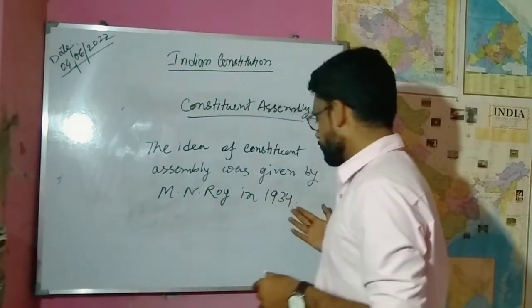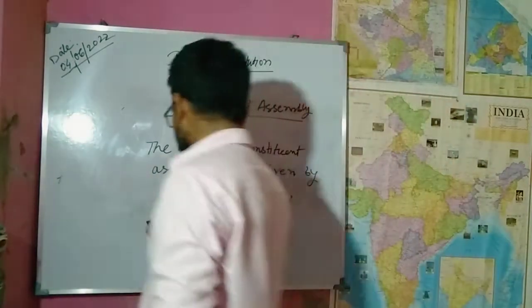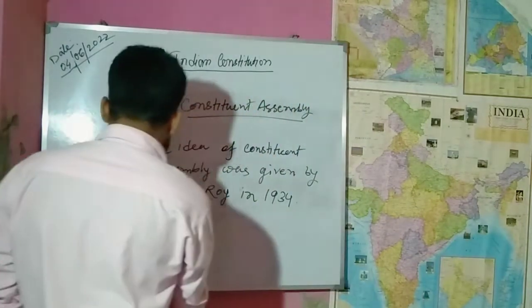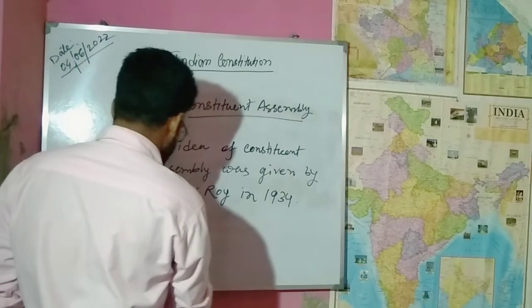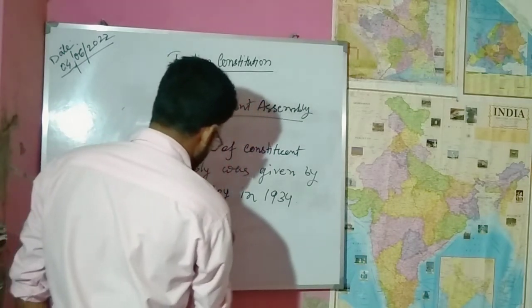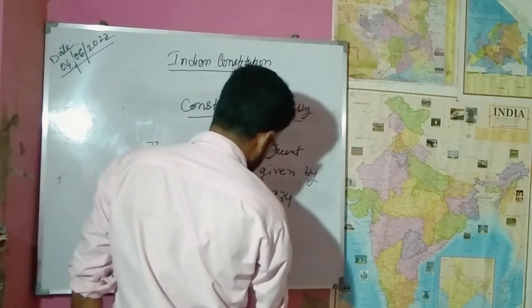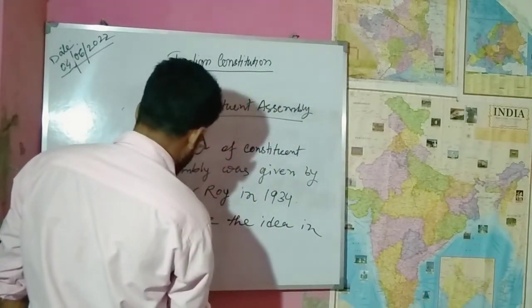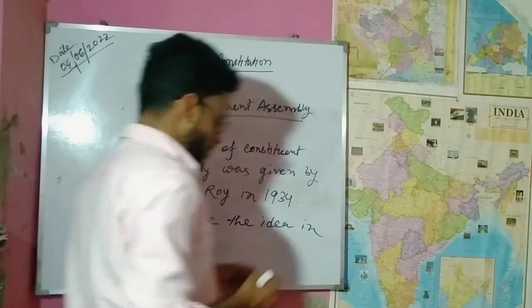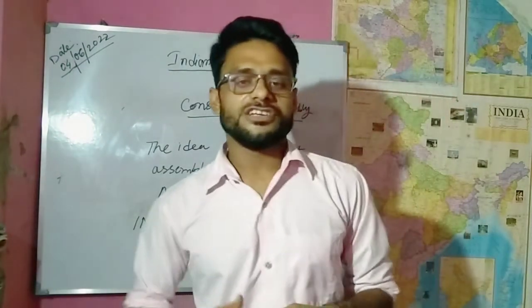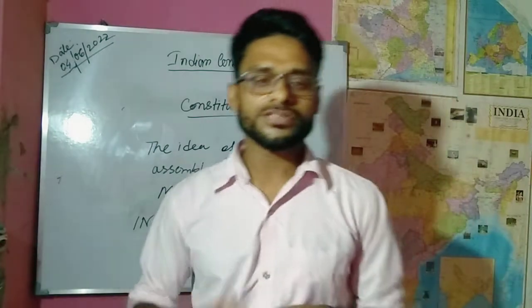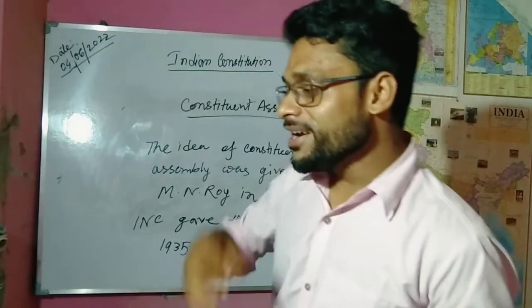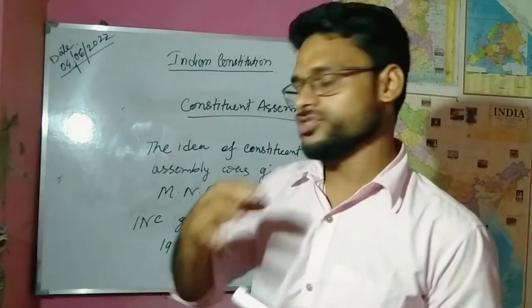And after 1934, again, by INC — that means Indian National Congress — INC gave the idea in 1935. So again in 1935, the Indian National Congress gave the idea to make the Constituent Assembly, and it is needed to make the Constitution.